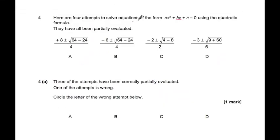Right, question 4. Here are four attempts to solve the equation AX squared plus BX plus C equals 0 using the quadratic formula. They have all been partially evaluated. Three attempts have been correctly partially evaluated. One of the attempts is wrong. Circle the letter of the wrong attempt below. So this is a pretty weird question. So if we think about what the quadratic formula looks like. So you need to know this by heart for your test. Okay, so we've got minus B on the outside, so 8 minus 6 minus 2 minus 3. So they could be plus or minus because B could be plus or minus. Then inside we should have whatever B was squared minus 4AC. So here we've got an 8. 8 squared is 64. Here we've got a 6 and 6 squared is not 64. So the others check out. So I think that is the mistake there, is because this is B squared, that must be wrong. So the answer for that would be B.